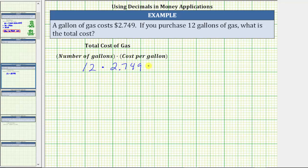To determine the product, we will use the commutative property of multiplication and change the order of the multiplication. Which means to determine this product, we will determine 2.749 times 12.